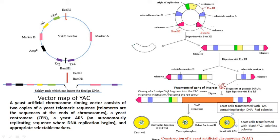Cloning of foreign DNA fragments into YAC causes insertional inactivation, which can restore the red color of the yeast colonies. Here you can see how this large fragment of gene of interest is cloned between the two selectable markers. Finally, you can transform this linearized form into the yeast cell. You can get two types of yeast colonies: red colonies, which contain the foreign DNA — when the YAC vector contains foreign DNA it produces red colonies because insertional inactivation occurs.